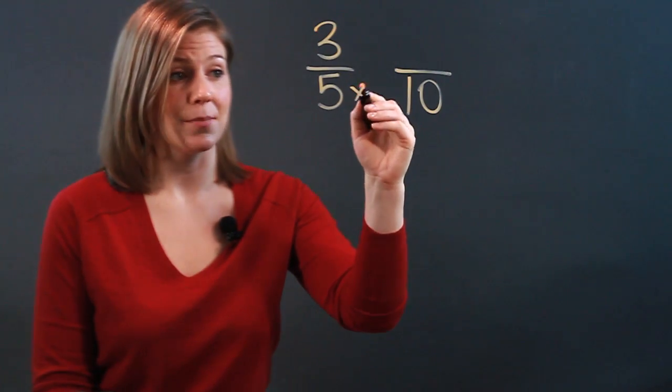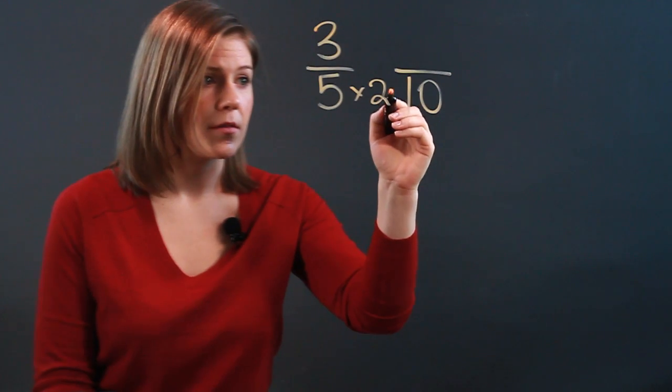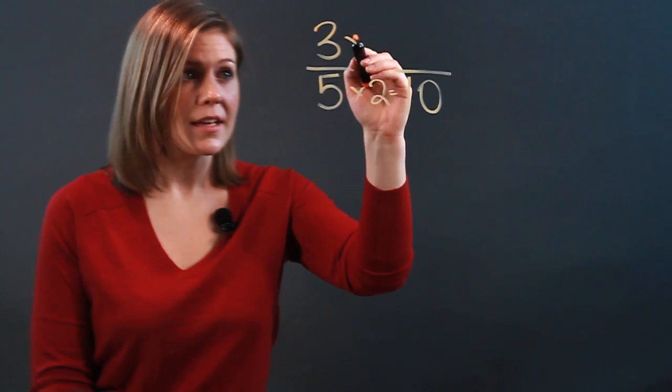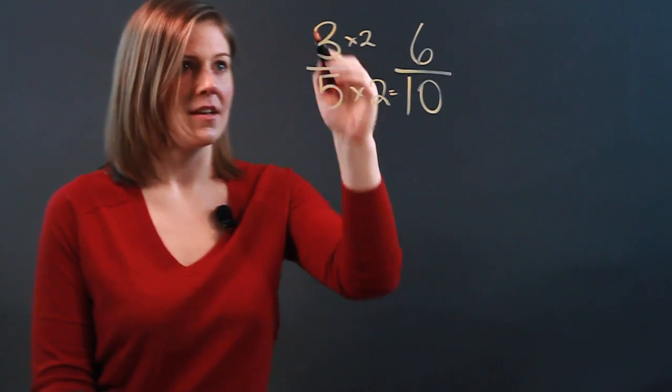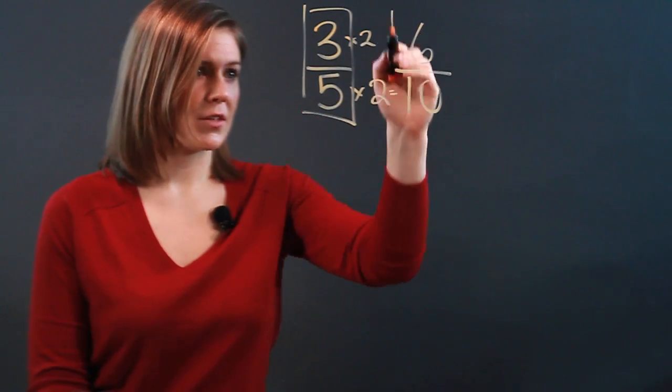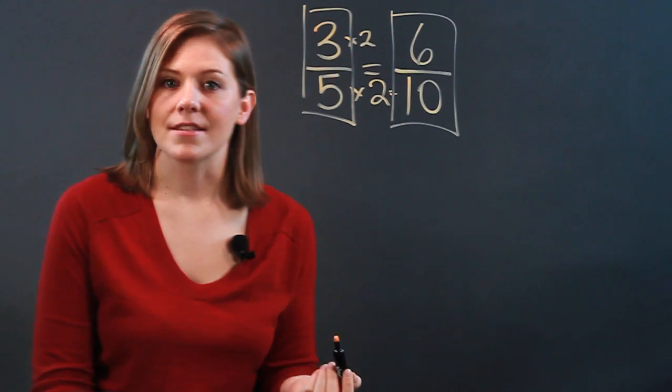And if we're doubling, well then we're multiplying by 2. So 5 times 2 gives us 10 and 3 times 2 will give us 6. Now we have an equivalent fraction since 3 fifths is equivalent to 6 tenths.